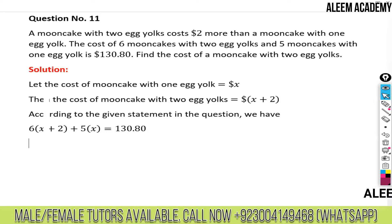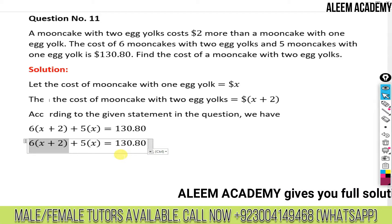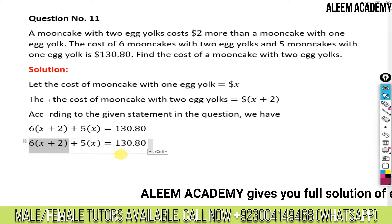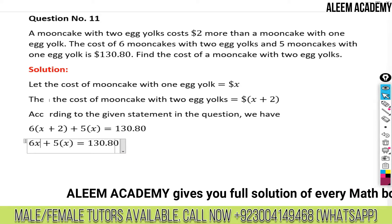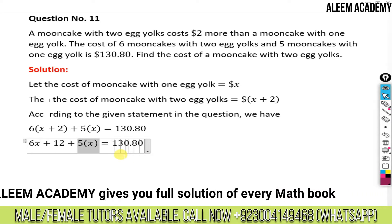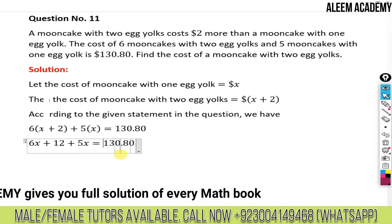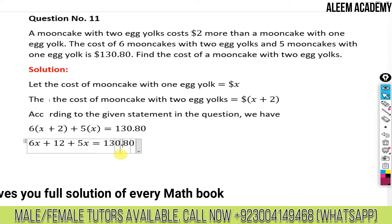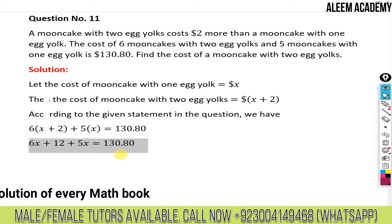Now we solve it. Multiplying six into the bracket: 6x plus 12, and then five multiplied by x gives five x. So the equation becomes: 6x + 12 + 5x = 130.80.